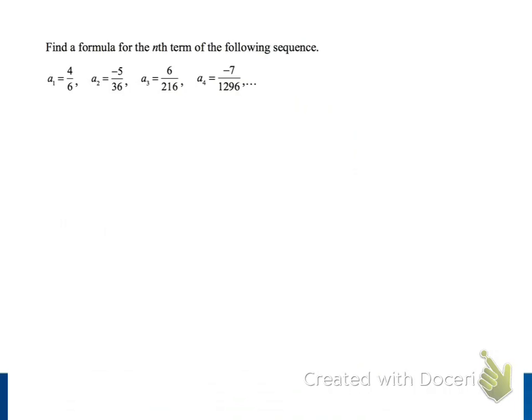We notice that each of our terms is a fraction, so we start by writing a_n with a line for our fraction, and first we're going to consider the numerators of our terms. We notice that the numerators include the consecutive numbers 4, 5, 6, and 7, and we want to relate this pattern to the index, or the number, of each of our terms.